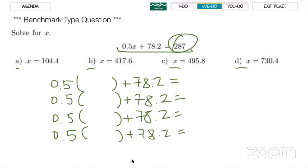First one is we need to put x equal 104.4. And see if the result is 287. So it was 0.5 times 104.4 plus 78.2. And that is 130.4. And it's not equal to 287. So A, it's not the option.